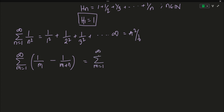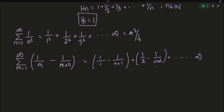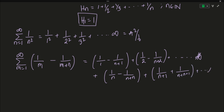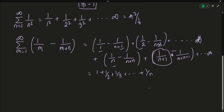Expanding the telescoping series: we get 1/1 minus 1/(n+1), then 1/2 minus 1/(n+2), and so on. As this counter reaches n, we get 1/n minus 1/(2n), and from that point onward all terms cancel with the corresponding negative terms. Since this goes to infinity, except for the first n terms, all remaining terms cancel, and we are left with 1 + 1/2 + 1/3 + ... + 1/n.